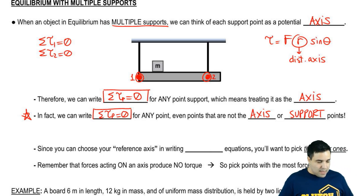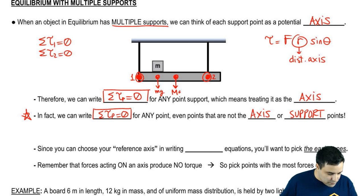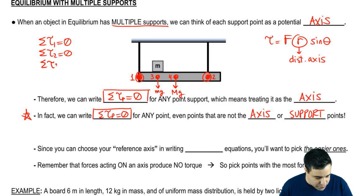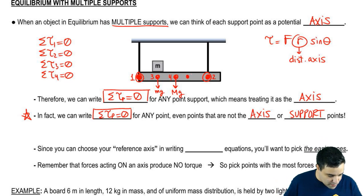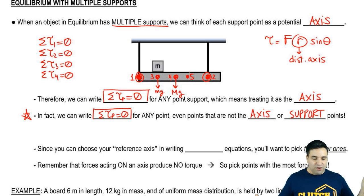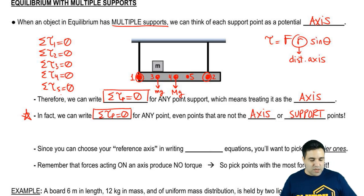What's even more important is that we can write the sum of all torques about a point P equals zero for any point on this bar — any point, even if those points are not axis or support points. For example, there are points where little mg acts, where big mg acts, and you can write this equation for all of them.